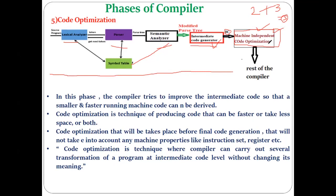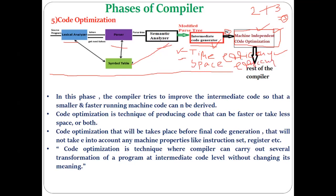The changes in the code optimization phase happen for two important reasons: first, to improve time efficiency — how your code can be executed in less time; and second, to improve space efficiency — how the space required for your code can be reduced. Code optimization is performed on the intermediate code for these two purposes.